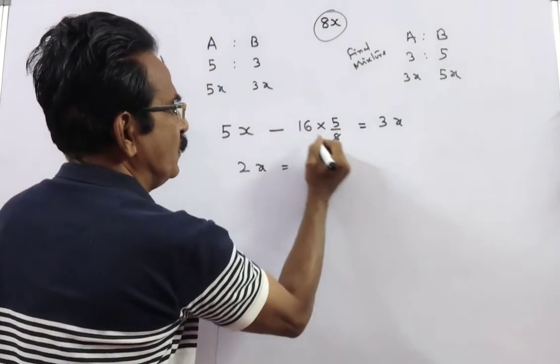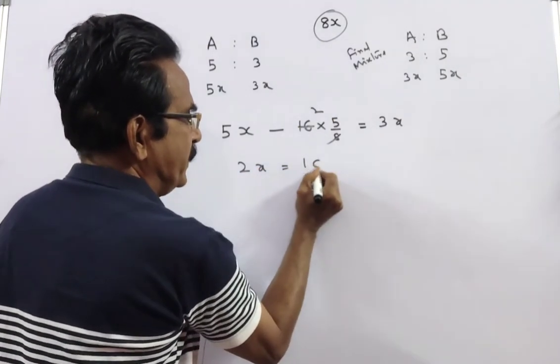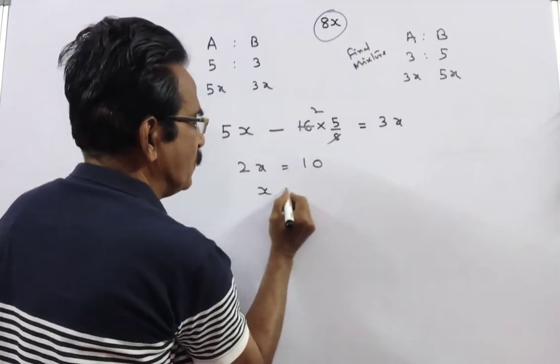2x is equal to 10 liters. X is equal to 5.